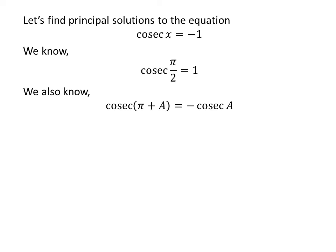We also know the famous trigonometry identity: cosecant of pi plus A is equal to minus cosecant of A. The proof of this trigonometry identity is given in the video appearing in the upper right corner. The link of the video is also given in the description section.